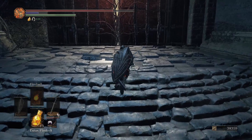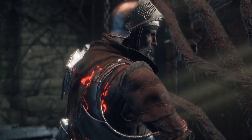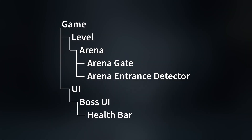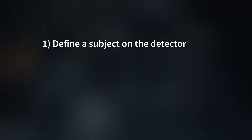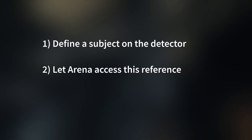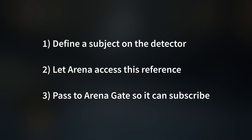So that's the basic theory out of the way, but what would its usage actually look like in a full game? Well, if your subjects and observers are close to each other in the tree, you can get away with connecting them more or less directly by passing around a reference to the subject. Let's go back to our example of locking a gate when the player enters the arena, and let's assume our level hierarchy consists of an arena object that houses everything inside the arena, including our gate and entrance detector. In this instance, the observer pattern is a great fit for notifying the gate of the player entering the arena. We can set this up by defining a subject on the arena entrance detector that fires when it detects the player, having the arena object access and store a reference to this subject during level initialization, and passing this reference to the arena gate so it can subscribe to the subject and lock itself when the event is emitted.